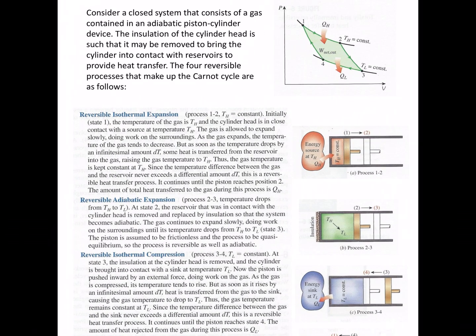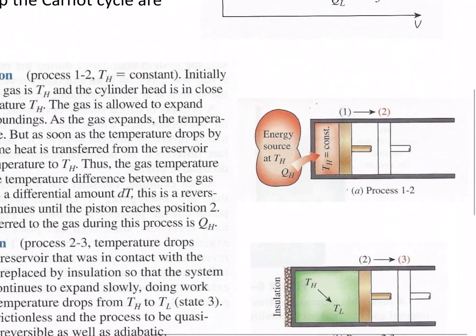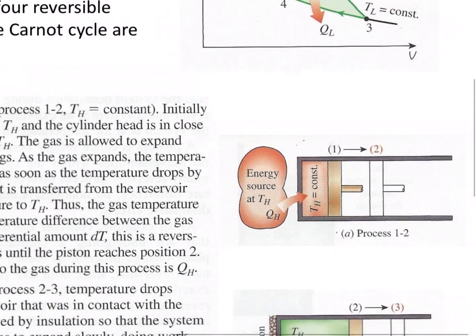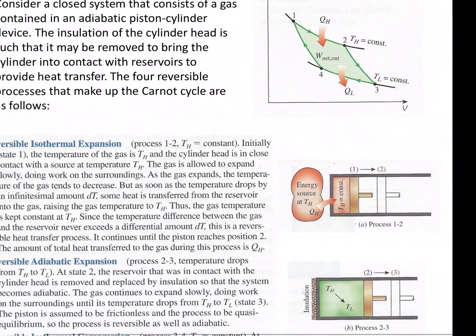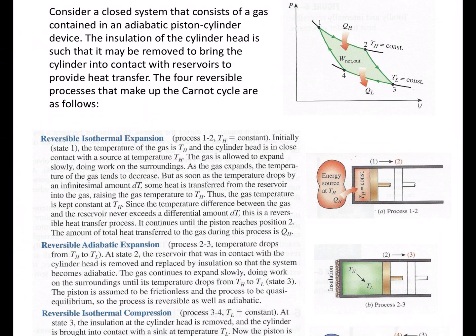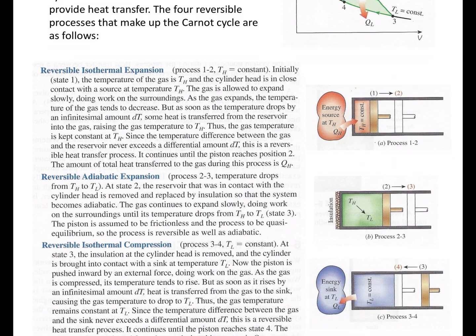From one to two is a reversible isothermal expansion. Again, this is never going to really happen. If you have an energy source at some temperature and the temperature inside there is the same temperature, there's not going to be much heat transfer. But if it's small enough, if we can get it small enough, then we can say, okay, that's the best. That's the ideal.